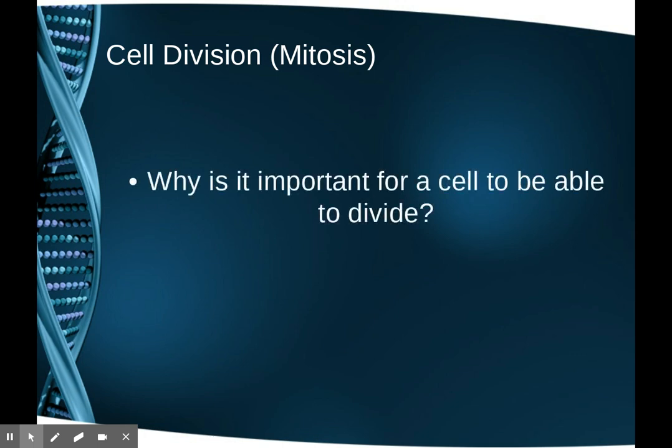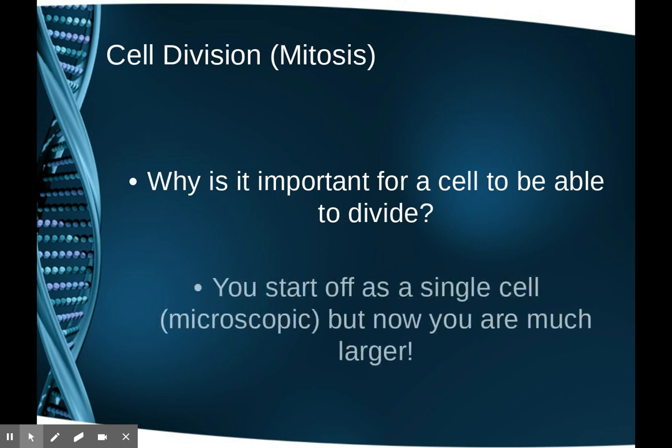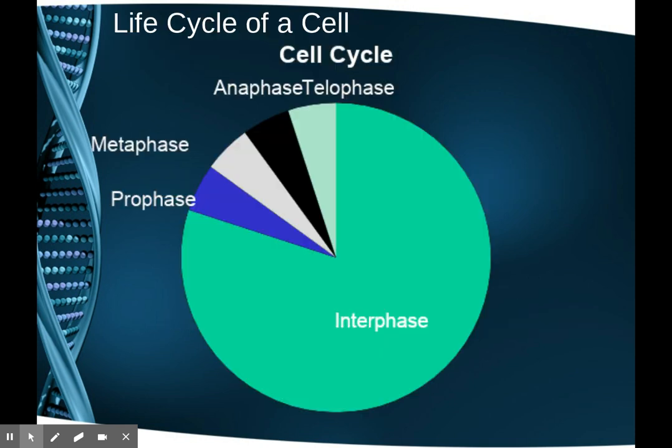Why is it important for a cell to be able to divide? We'll look at unicellular and multicellular organisms and the different reasons each needs to divide. For us, every single one of us started off one cell big — microscopic — but now we have somewhere in the neighborhood of 10,000 trillion cells. How did we get there from just one cell? Cell division, or mitosis.